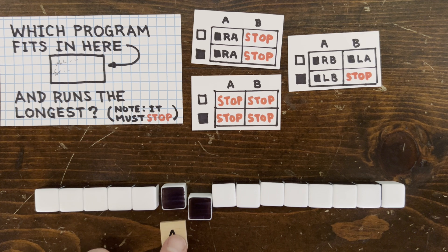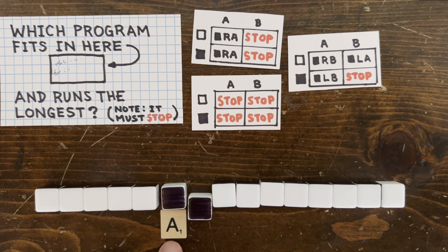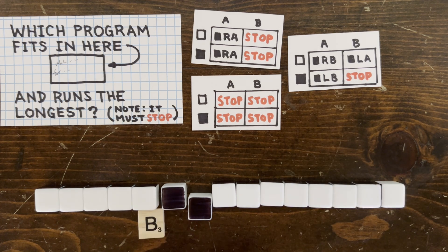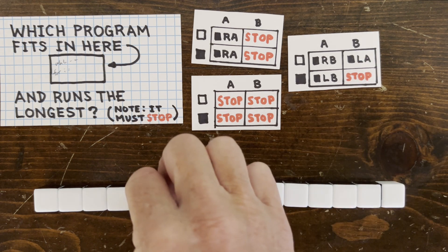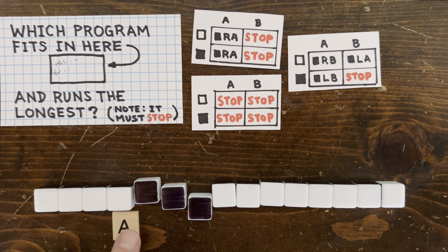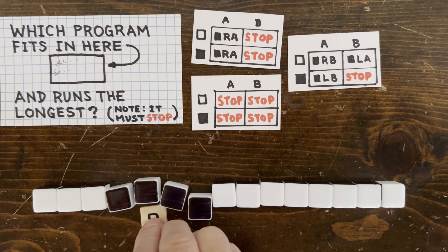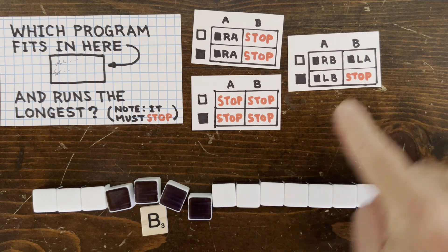And we're in state A looking at a black cell. Well, that's something new. Looks like we leave it black, then go left into state B. Now fill this cell and go left into state A, and fill this cell and go right into state B. And finally, we're in state B looking at a black cell, so we stop.